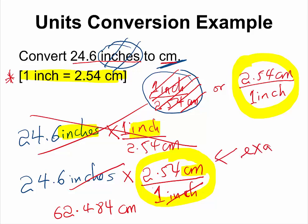So, we are not going to base our rounding of the final answer on the conversion factor. We would only base our rounding on the measurement that was provided to us. And this measurement has three significant figures. So, our final answer will be three significant figures, which will be 62.5 centimeter.